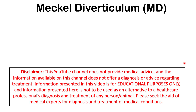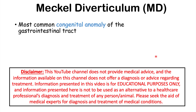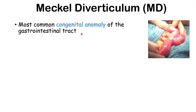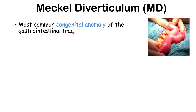We're talking about a condition known as Meckel's diverticulum. Meckel's diverticulum is the most common congenital anomaly of the gastrointestinal tract, meaning that it is something a patient is born with. It is an anomaly of the gastrointestinal tract, more specifically the small intestine.